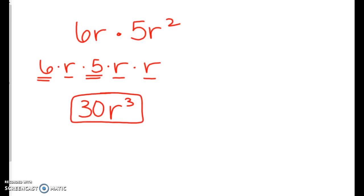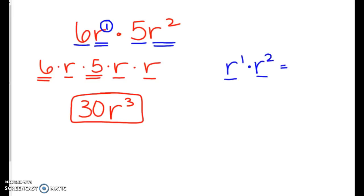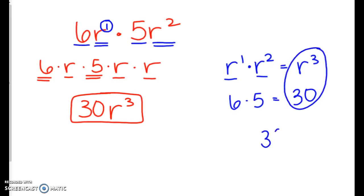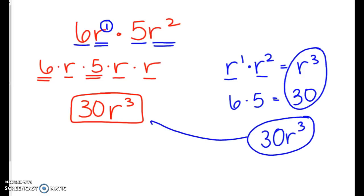We're left with six times five, and six times five is thirty, so we combine those together to get 30r³. Some people don't need to write it out in expanded form — they can just recognize like terms and use our multiplication property. Notice we have the same base r, and I put a little one up here because when there's no exponent written, there's that invisible one. So r to the first times r to the second — same base — we add those exponents to get r to the third, and then we have 6 times 5 left over which is 30. I like to put our numbers out in front: 30 times r to the third power.